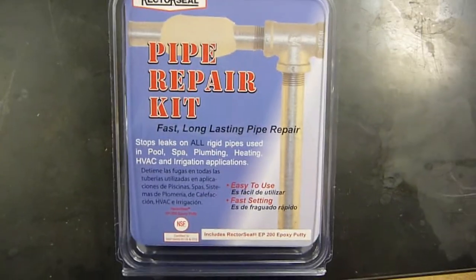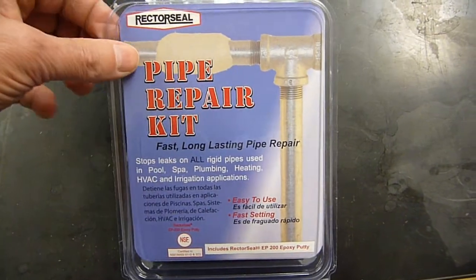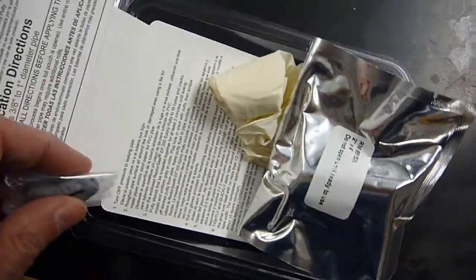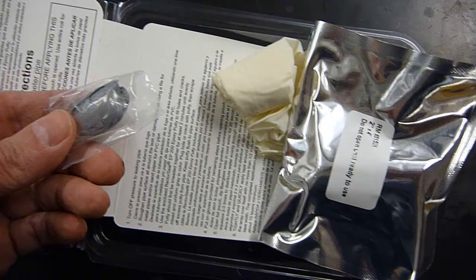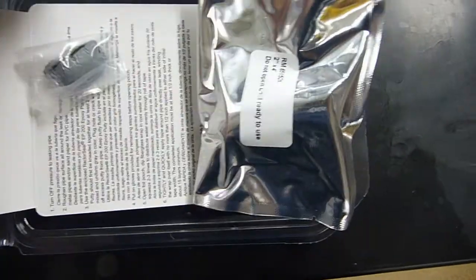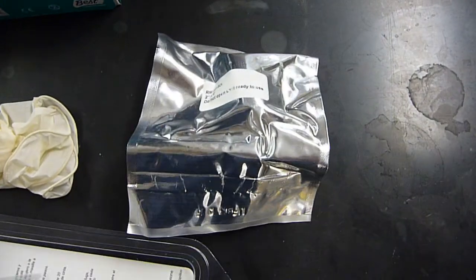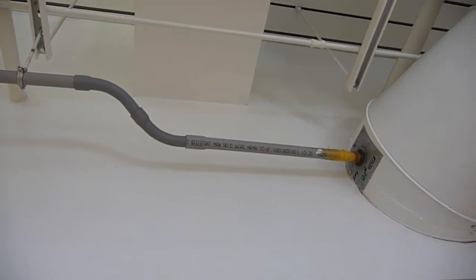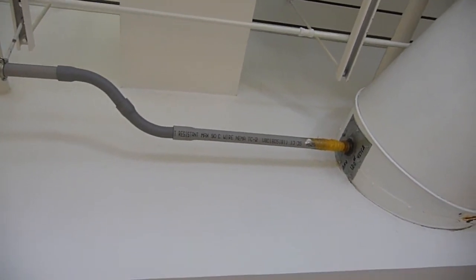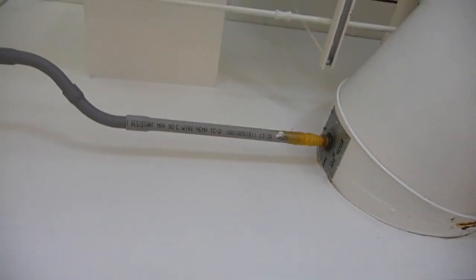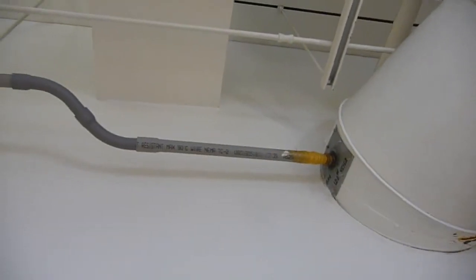Before we get to the after, so this is the pipe repair kit. You open up the contents, and I guess it has some sort of sealant, like epoxy putty, some gloves, and then that's the business end. And the reason I'm using this epoxy reinforced sealant to the joint is because